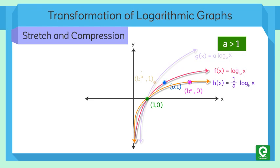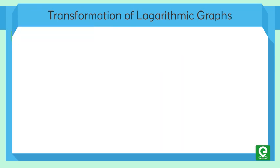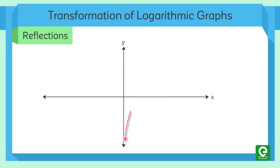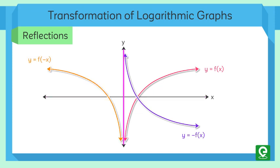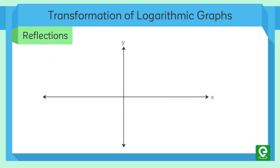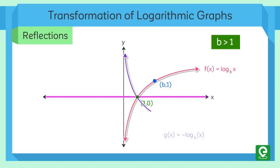Fourth transformation: reflections. When the parent function is multiplied by -1, the result is a reflection about the X-axis. And when the input is multiplied by -1, the result is a reflection about the Y-axis. First, let us restrict the base b to be greater than 1.